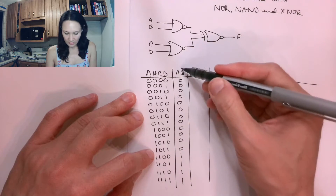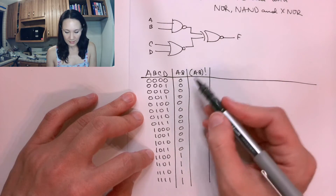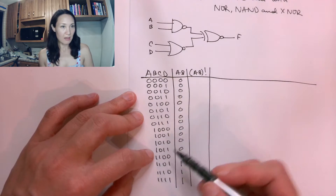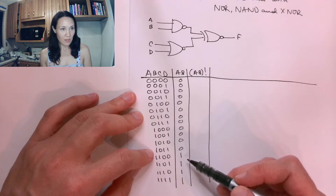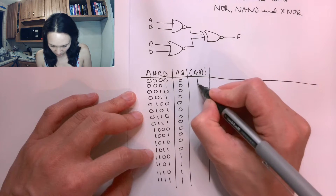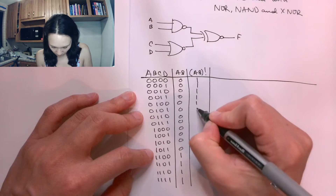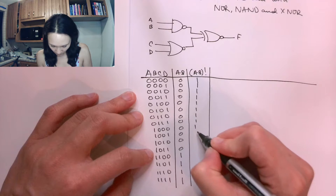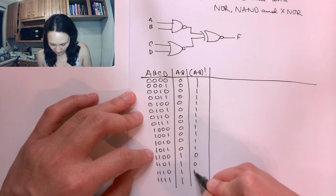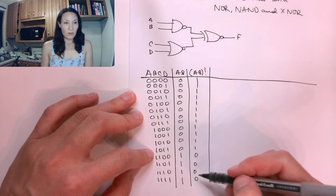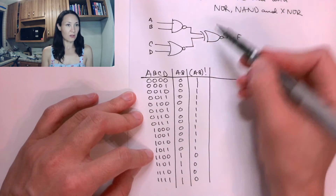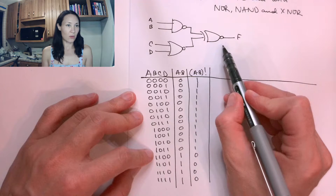The reason why I like to do the AND first is now I don't have to look at any of the inputs — I just take this column, and wherever I see a 0, I put a 1. So this will be 1, 1, 1, 1, 1, 1, 1, 1, 1, 1, 1, 1, 1, 0, 0, 0, 0. So this here is now one of the inputs coming into the XNOR.